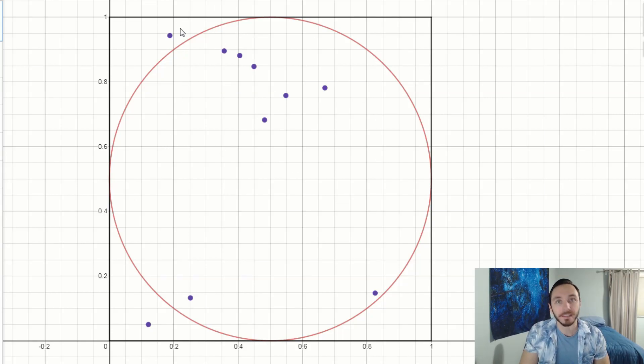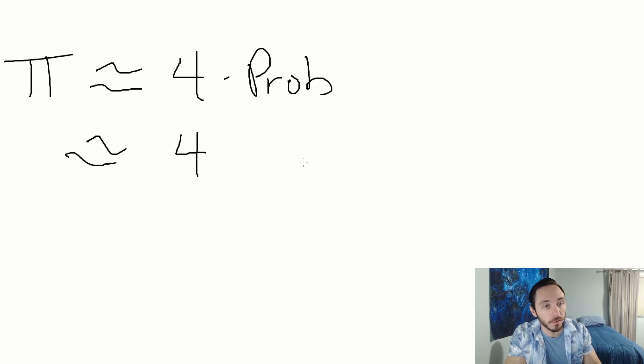In the instance of 10 darts, it looks like I hit 8 and missed 2. So my probability of hitting is 80%. Pi is approximately equal to 4 times that probability, 0.8. So in just 10 darts, I have a decent approximation for pi. It's 3.2.